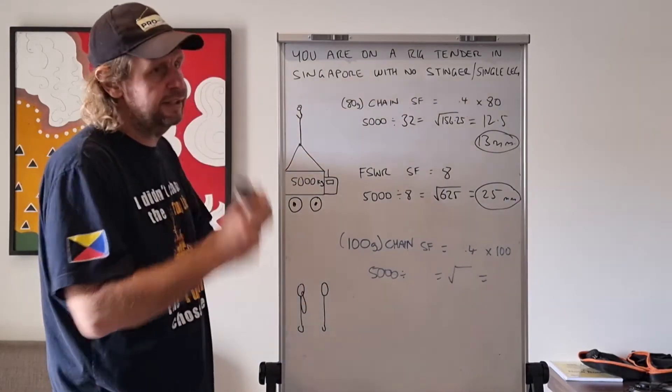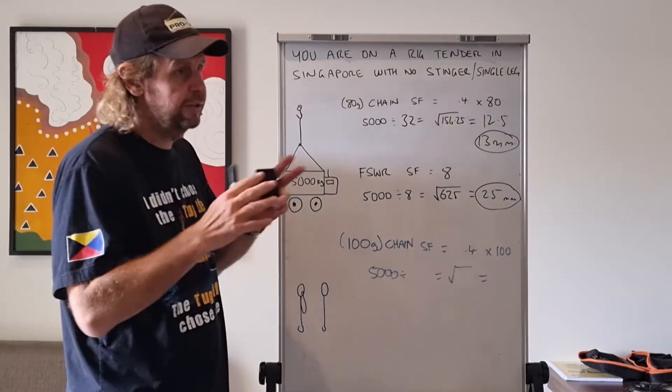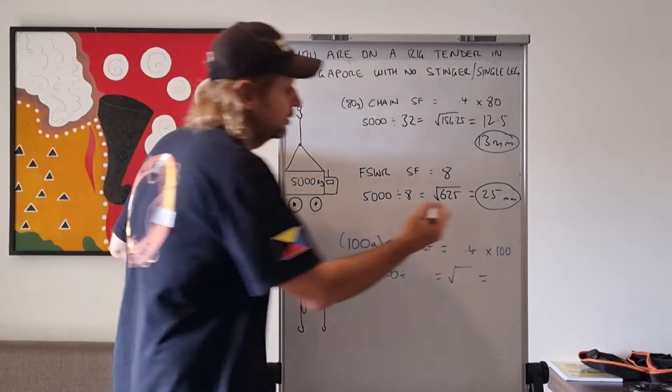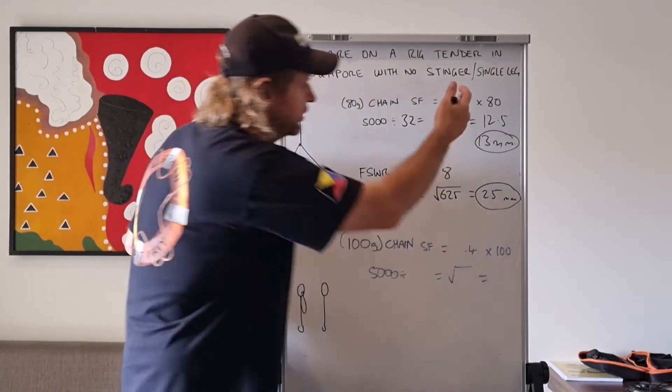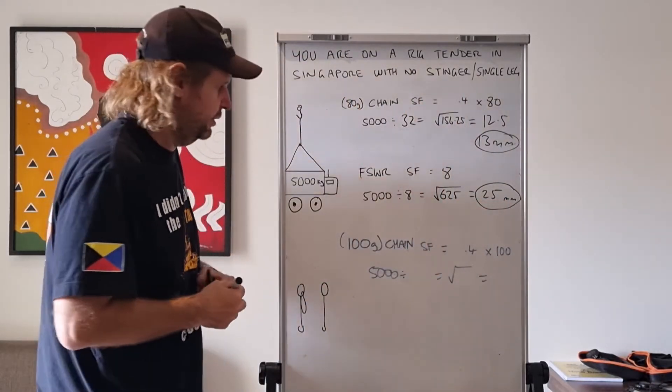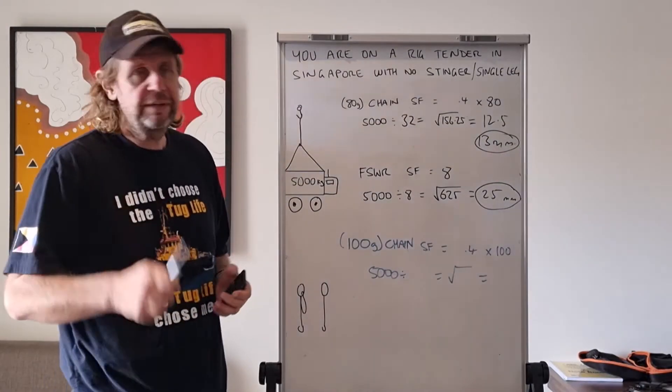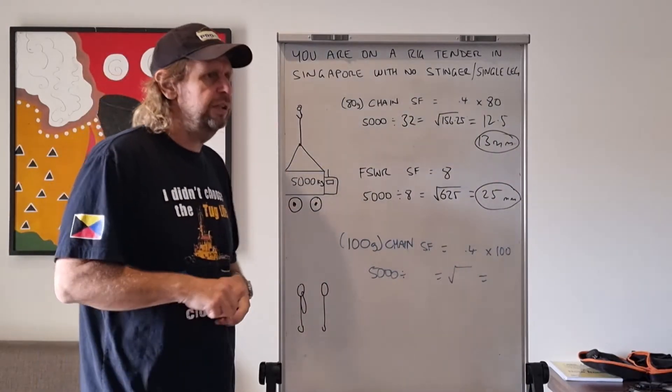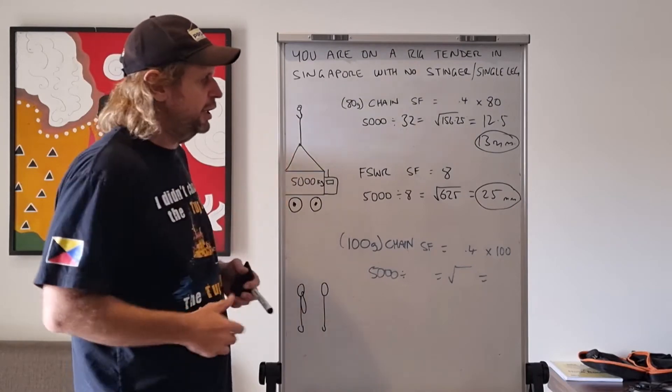So you ask the company vessel next to you, have you got any of those size slings or a two-legged sling or a stinger or whatever? No, they don't. So you ask the Norwegians - the Norwegians, they've got everything. Oh yeah, we have, but we've only got the 100 grade chain.